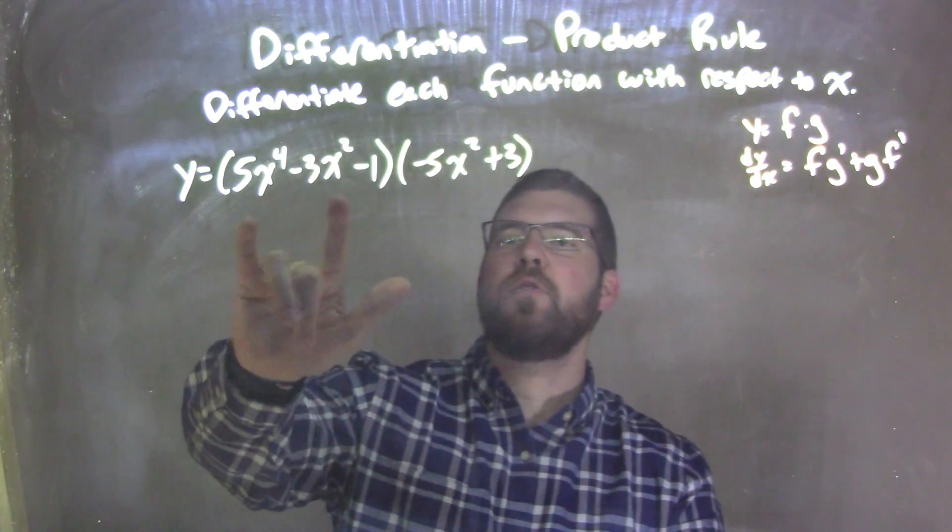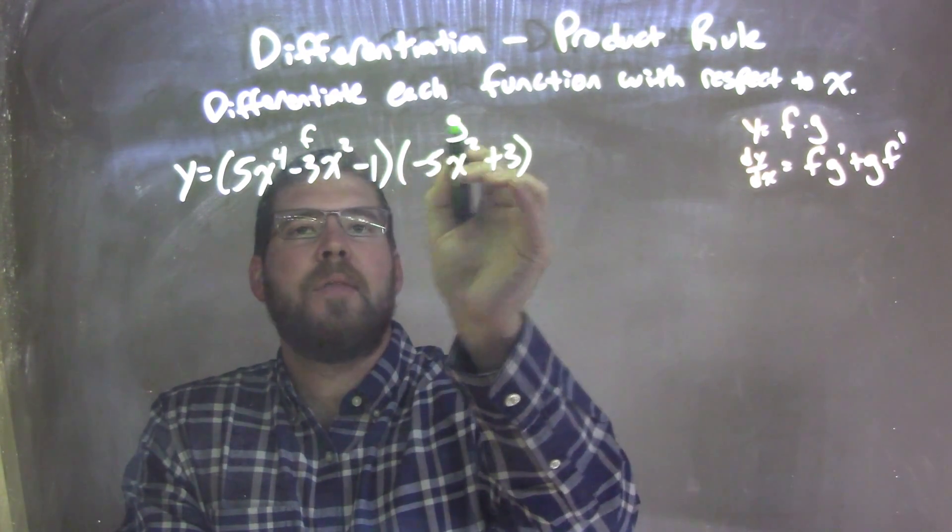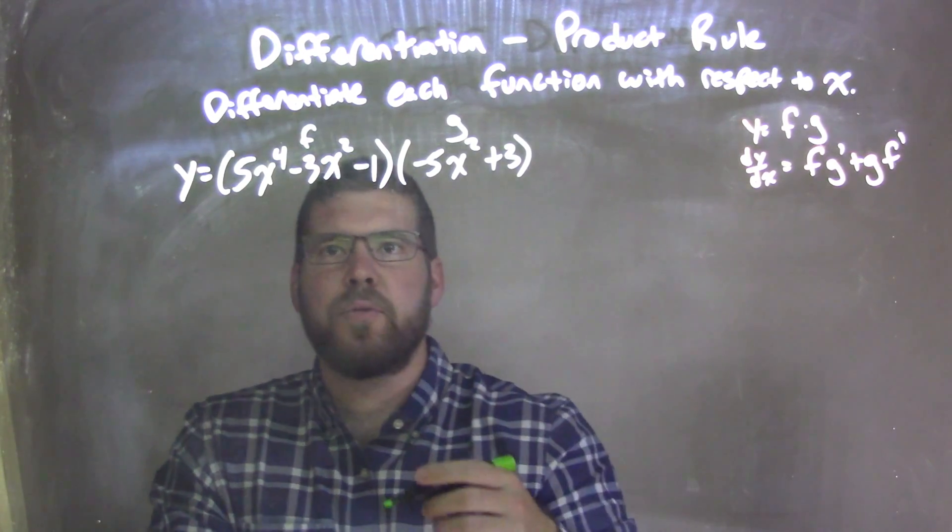Well, I see I have two functions that I'm multiplying together. I can label the first one f and the second one g, and this allows me to really see the product rule here.